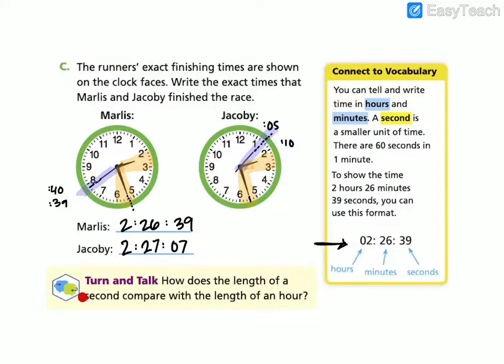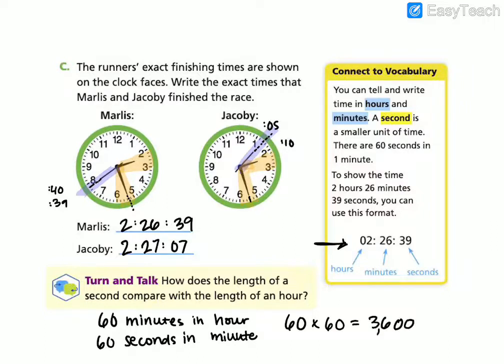So it asks us here, how does the length of a second compare to the length of an hour? Well, a second is less than an hour, right? A minute is more than a second. If we know there are 60 minutes in an hour and 60 seconds in a minute, then we can find how many seconds are in an hour. So we have our 60 times 60. Six-tenths times six-tenths is equal to 36 hundredths. So there are 3,600 seconds in an hour, meaning one hour is 3,600 times longer than a second.